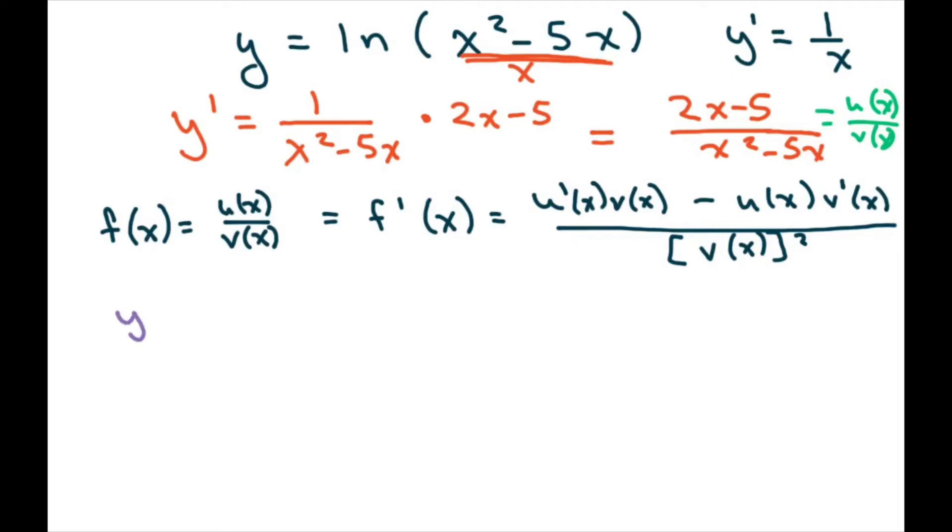So y double prime equals the derivative of u, which is 2x minus 5 here, which is going to be 2 times my vx. My vx is x squared minus 5x. Then you say minus,